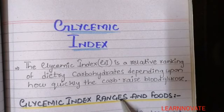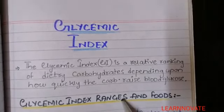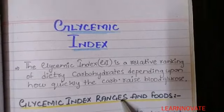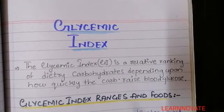Chocolates, candies, and the cakes we eat are all considered high glycemic index foods because they cause a sudden rise in our blood glucose level. This is the definition of glycemic index.